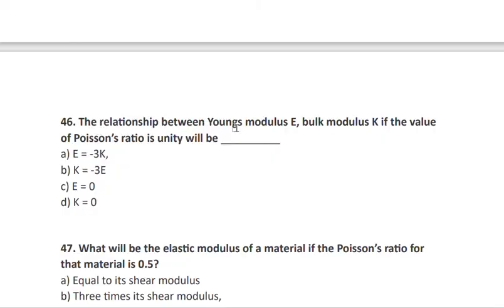Question 46: the relationship between Young's modulus E and bulk modulus K — if Poisson's ratio is unity (1), then Young's modulus equals negative 3K, i.e., E = −3K.